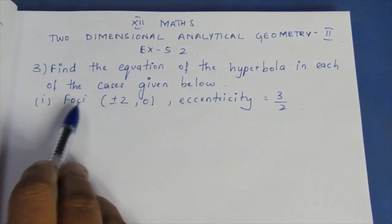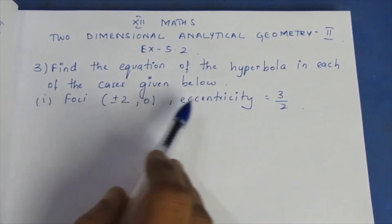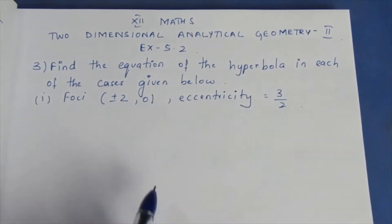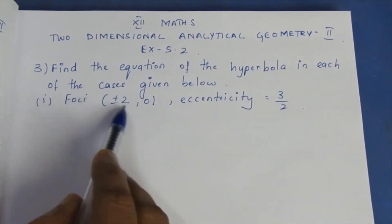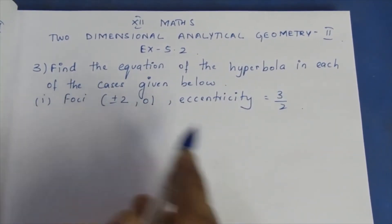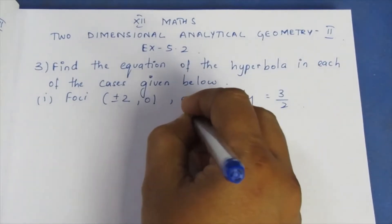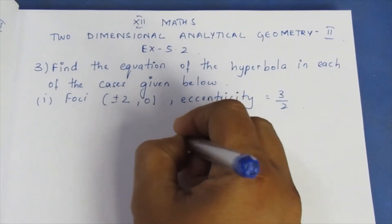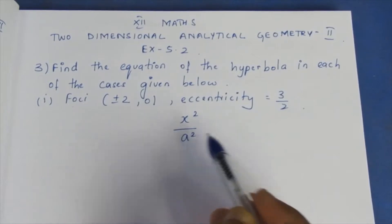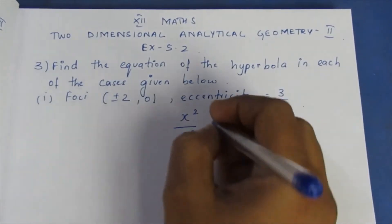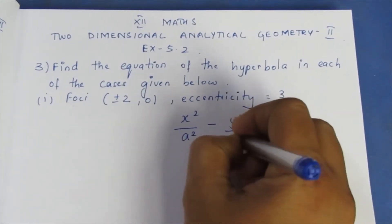Find the equation of the hyperbola in each of the following cases given below, where foci and eccentricity are given. The first sum has foci at plus or minus 2, 0 and eccentricity 3 by 2. Since the foci are on the x-axis, the equation of the hyperbola is x-square by a-square minus y-square by b-square is equal to 1.